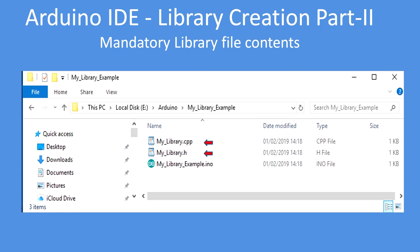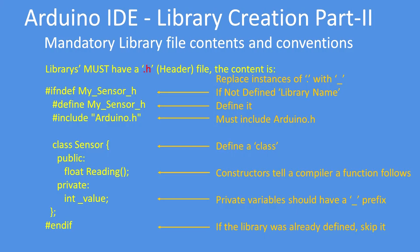Reminder that there are always two files: the dot H header file and the dot CPP C++ file. All Arduino libraries must have a dot H file, and the convention is that the dots are replaced with underscores. You must test for the inclusion of the library, and if it hasn't been included, define a logical name. You must include the Arduino IDE core, and then define the class name, and what functions and variables are public and private.